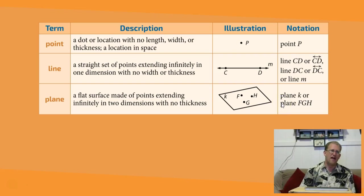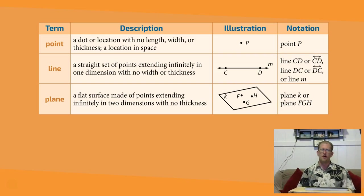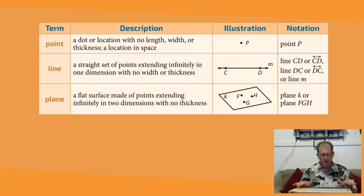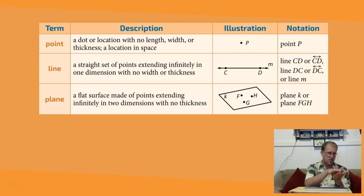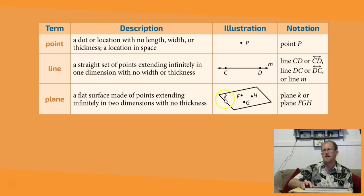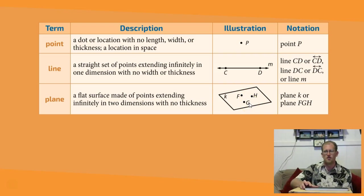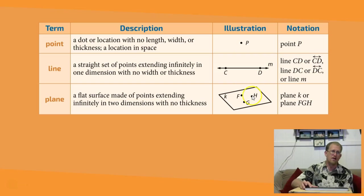A plane is a flat surface made of points extending infinitely in two dimensions, but it has no thickness. Think of a bed sheet or piece of paper that's flat — now imagine that bed sheet wrapping the universe, going forever in two dimensions but with no third dimension. That's a plane. We can indicate a plane with a letter, like plane K, or by naming three points it contains — plane FGH. You need three points to identify a plane; just two points would only give you a line.